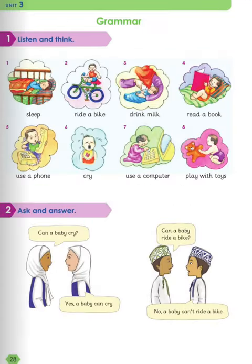Moving on to grammar, let's listen and think. These are pictures of babies. Let's see what babies can do and what they can't do. 1. Sleep — can they sleep? Yes. 2. Can a baby ride a bike? No, they can't. 3. Can they drink milk? Of course they can. 4. Can a baby read a book? No, they can't.